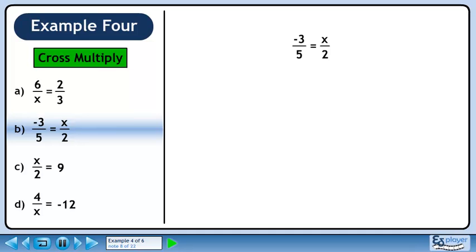In part b, we have the equation minus 3 over 5 equals x over 2. Multiply diagonally across the equals to get minus 6. Multiply diagonally the other way to get 5x. Write this down too, separating it from the first term with an equals.